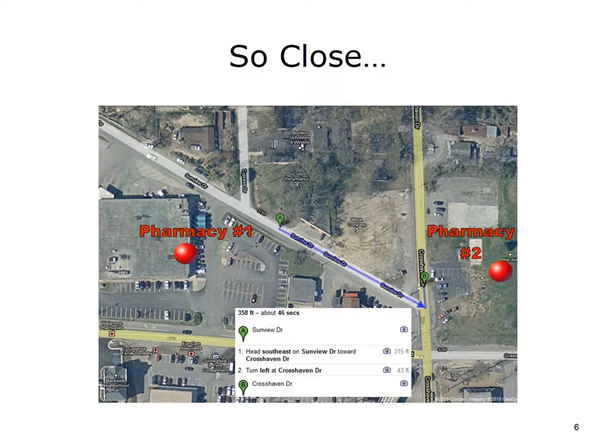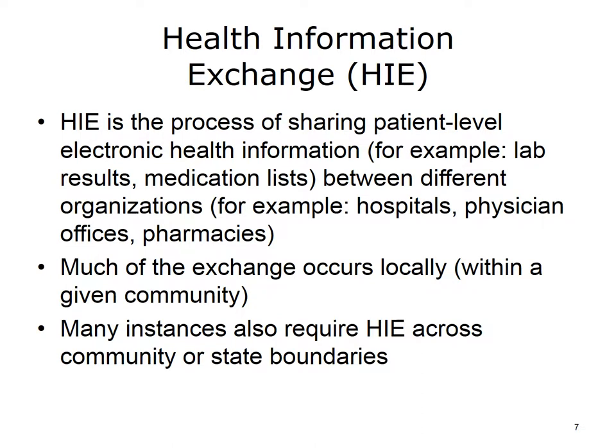Even hospitals that belong to the same national chains in most cases cannot transfer information about patients from one location to another. The National Alliance for Health Information Technology defined Health Information Exchange, or HIE, as the process of sharing patient-level electronic health information — such as lab results or medication lists — between different organizations, such as hospitals, physician offices, or pharmacies. Much of the exchange will occur locally within a given community, because most people seek most of their care close to where they live. Nevertheless, there are many instances that will require HIE across community or state boundaries.